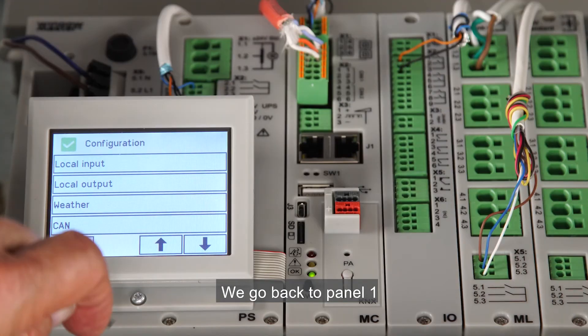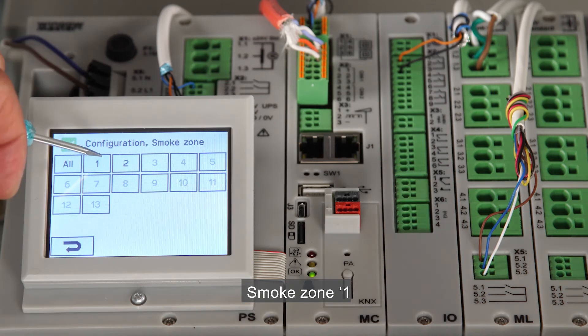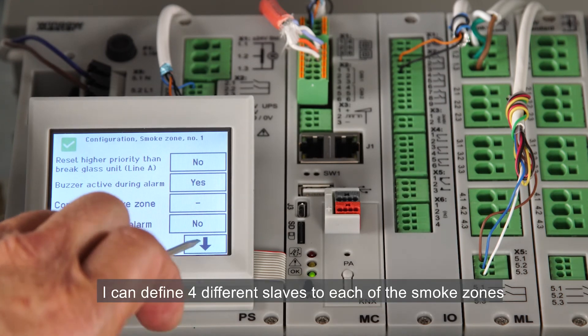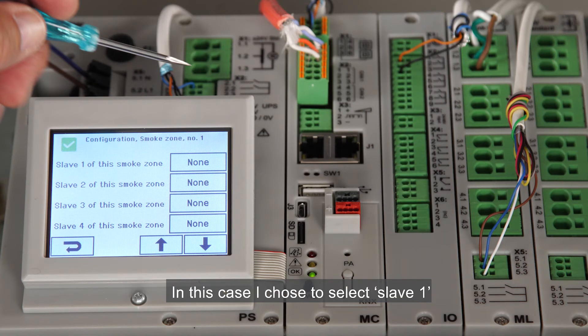We go back to panel 1. I'll now configure the smoke zone to be a master. From the configuration menu, I select smoke zone, smoke zone 1. I can define four different slaves to each of the smoke zones. In this case, I chose to select slave 1.